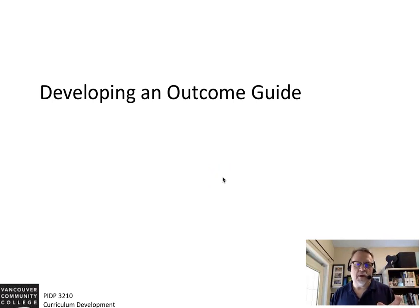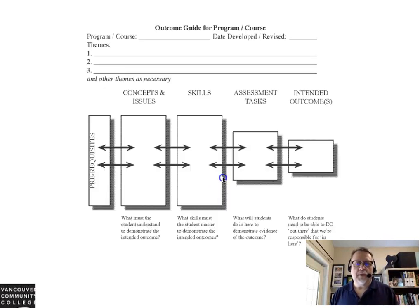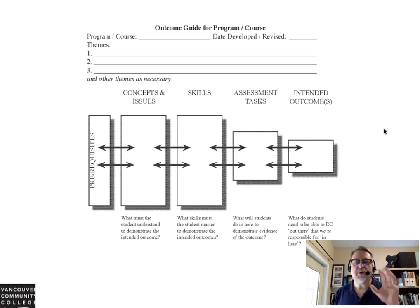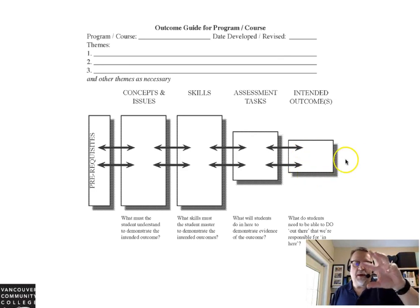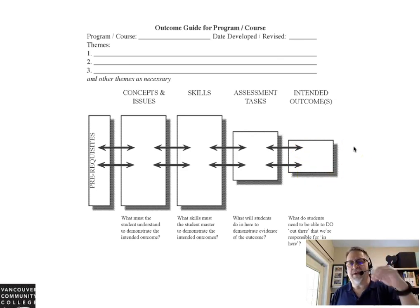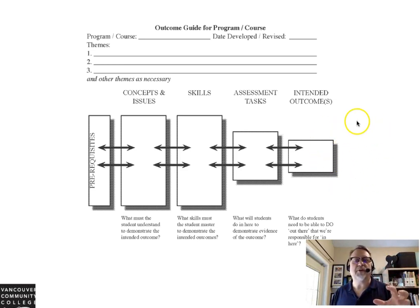Developing an outcome guide is a backward design process. The reason we call it a backward design process is that you start with who your learner will become, what your learner will be able to do, and from that you establish a purpose and write your intended learning outcomes.